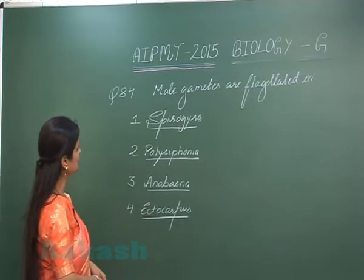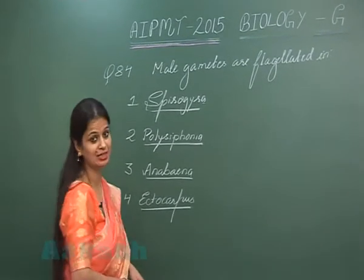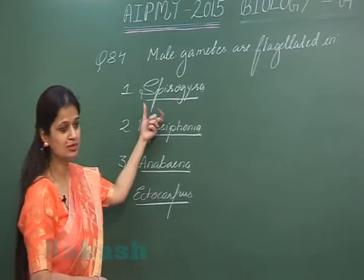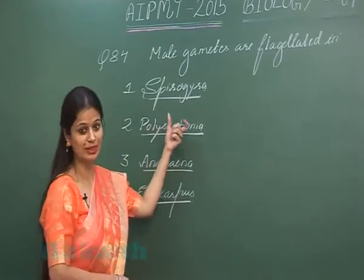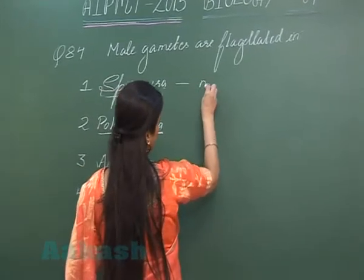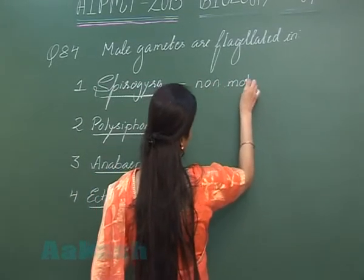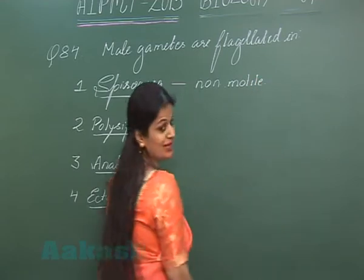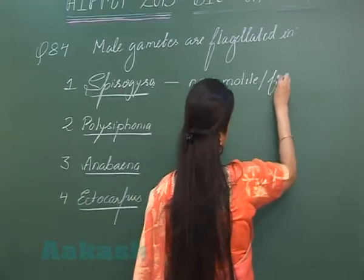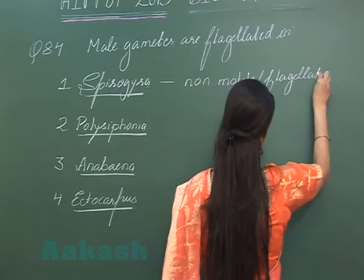Let's see question number 84: Male gametes are flagellated in? Spirogyra is a green algae in which there is formation of non-motile, non-flagellated gametes.